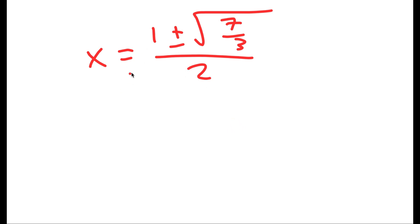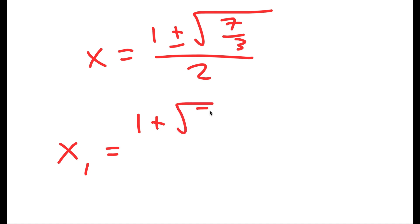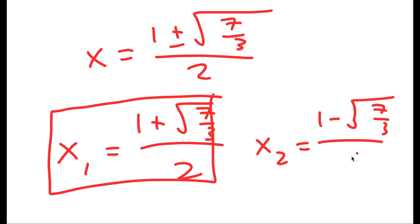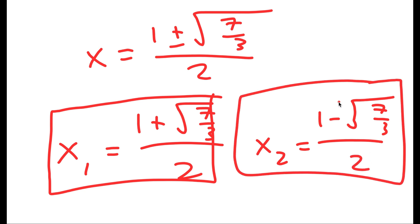So I have two solutions. The first solution is x equals 1 plus the square root of 7 over 3, all over 2. And the second one is x equals 1 minus the square root of 7 over 3, all over 2. Please make sure to subscribe, leave a like, and share this with your friends or family. Thank you.